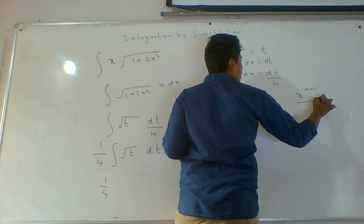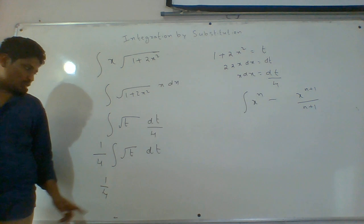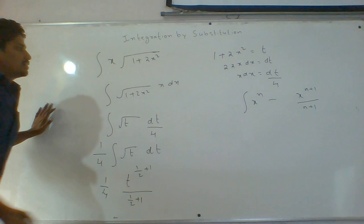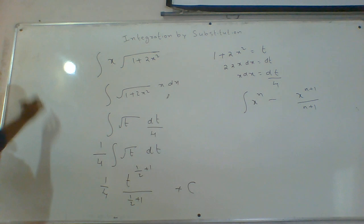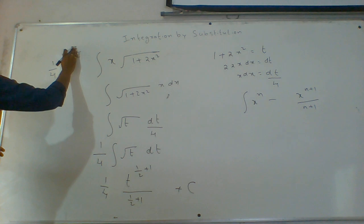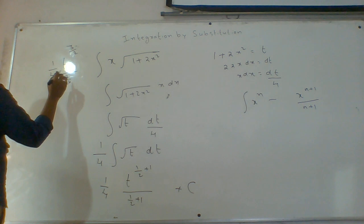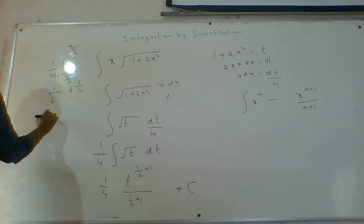The formula for integral x power n is x power n plus 1 by n plus 1. Here it is t power 1 by 2, so applying the formula: t power 1 by 2 plus 1 by 1 by 2 plus 1. As the integral is resolved, c will come. That gives 1 by 4 into t power 3 by 2 by 3 by 2, which simplifies to 1 by 6 t power 3 by 2.